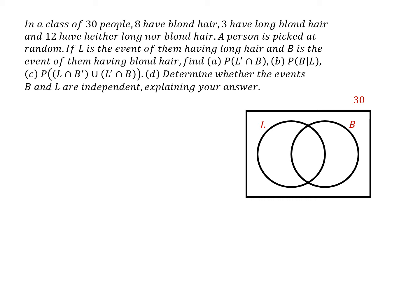I'll start in the middle and put the number 3 there - that's the number of people who've got long blonde hair. The people with blonde hair must include these 3 people with long blonde hair, so in this section here there must be 5 people. That gives us a total of 8 people with blonde hair.